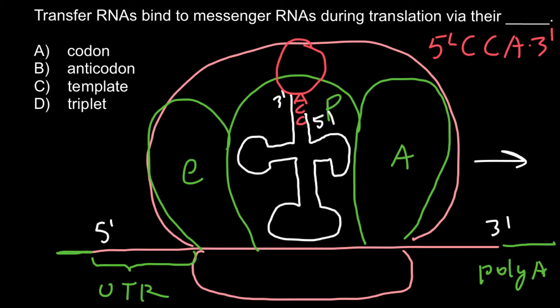My other hint would be the names of these loops. If this is going to be the 3 prime end, this loop we call T loop or TC loop, this loop we call D loop, and this loop here we call anticodon loop.